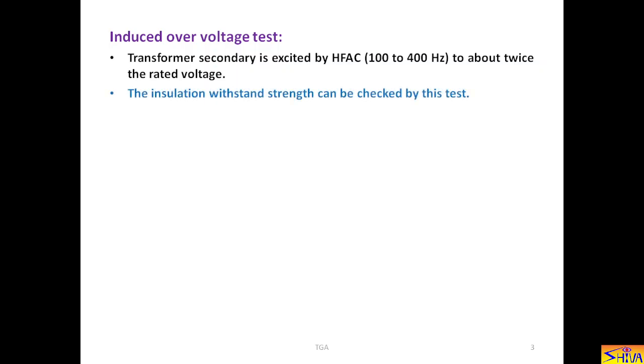Now, let us see what are the different tests performed on transformer. First is induced overvoltage test. Transformer's secondary is excited by high frequency AC in the range of 100 to 400 Hz to about twice the rated voltage. The insulation strength can be checked by this test.